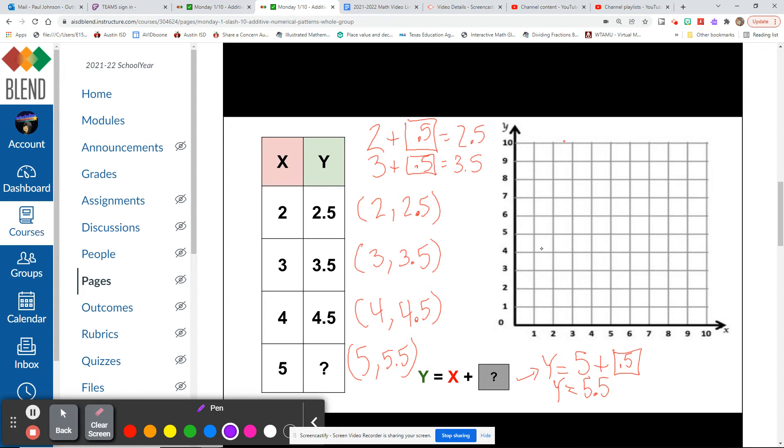Our first one is 2 and 2 and 5 tenths. So we're going to run 2 and jump 2 and a half. Our second one is 3 and 3 and 5 tenths. So we're going to run 3 and jump 3 and a half, halfway between 3 and 4.